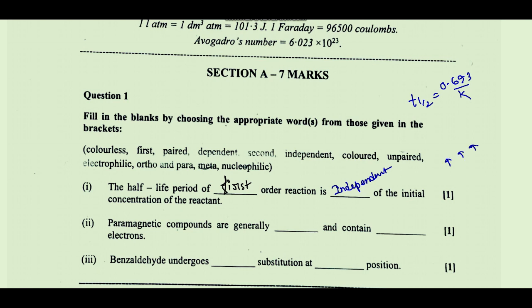Paramagnetic compounds are generated — paramagnetic means there are unpaired electrons. Because of the presence of unpaired electrons, paramagnetic compounds are generally colored and contain unpaired electrons.